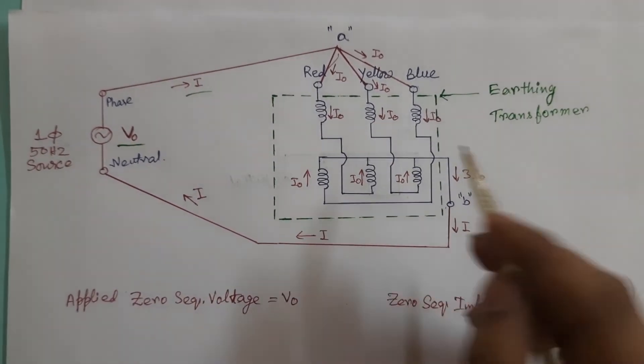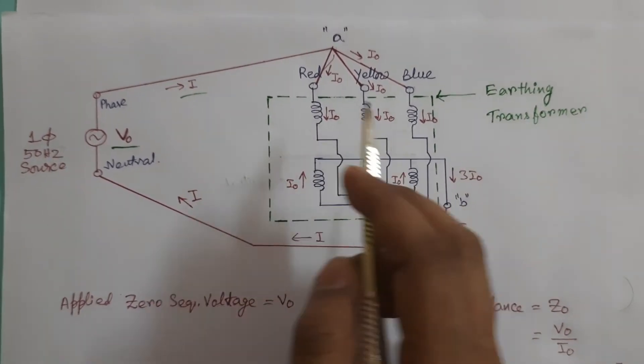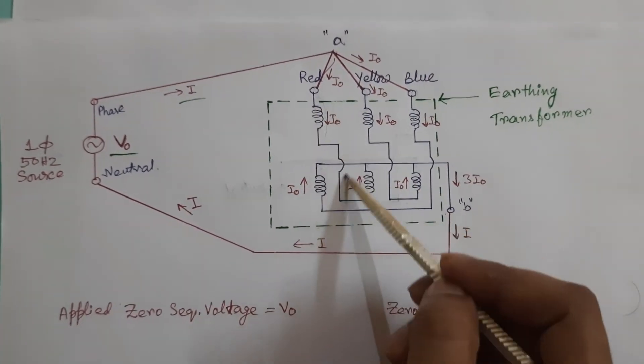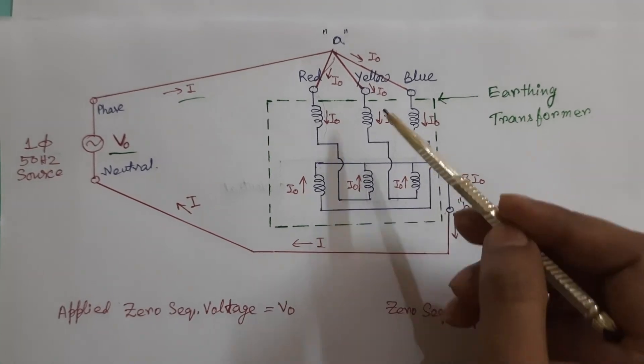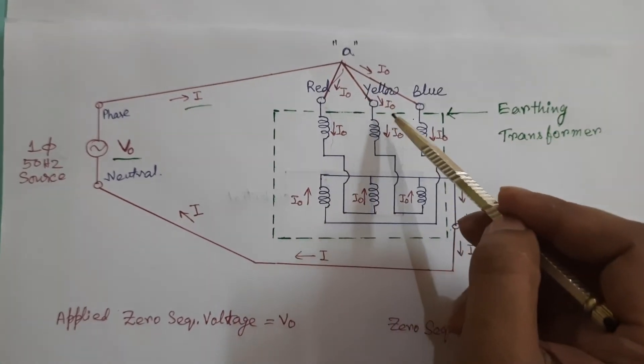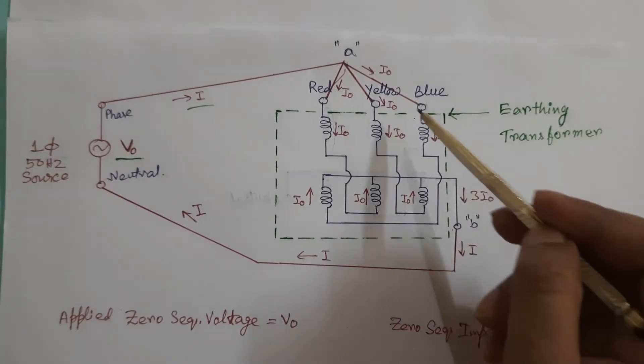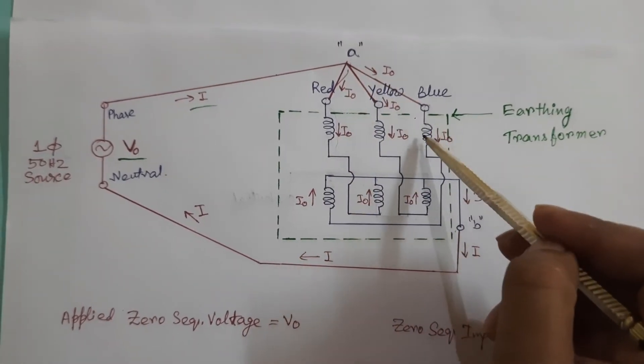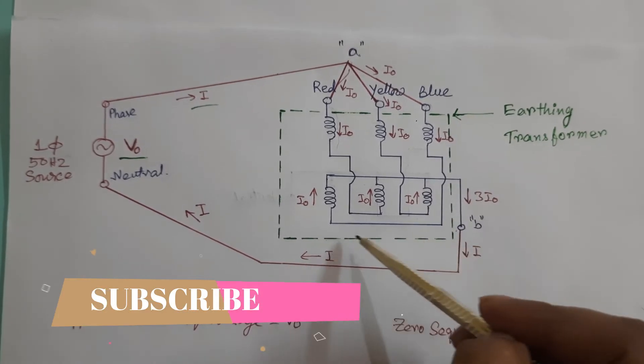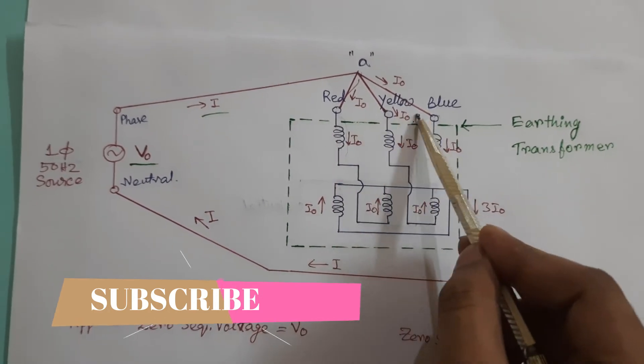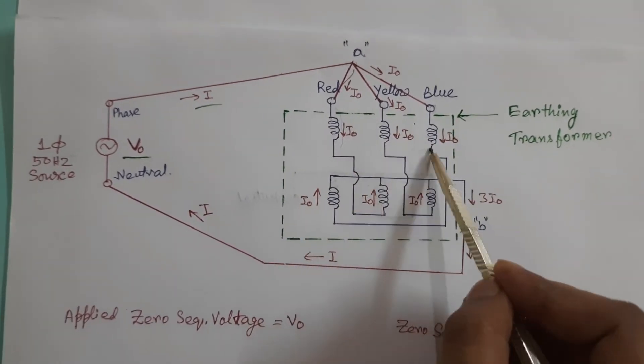Notice that there is three parallel path between A and B terminal. One is this one, second is this path and third path is this and zero sequence current I zero is flowing in each path.